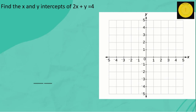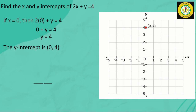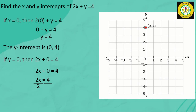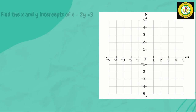First, find the x and y-intercept of 2x plus y equals 4. If x is 0, then 2 times 0 plus y equals 4, so 0 plus y equals 4 and y equals 4. The y-intercept is (0, 4). If y equals 0, then 2x plus 0 equals 4, so 2x equals 4. Dividing both sides by 2, x equals 2. The x-intercept is (2, 0). Since we have both points, let's plot them and connect with a straight line.